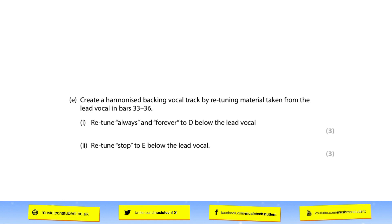For question E: create a harmonized backing vocal track by retuning material taken from the lead vocal in bars 33 to 36. Point one — retune to a third below the lead vocal. In a full-featured DAW like Logic you should have something like flex time and can move the note as if it were MIDI. It does have to sound natural as well as being retuned — that's why it's worth three marks. Point two says retune to a fifth below the lead vocal, making sure you use the full capacity of your DAW.